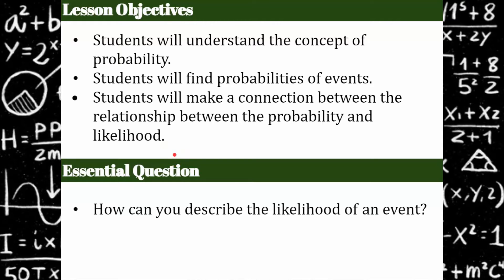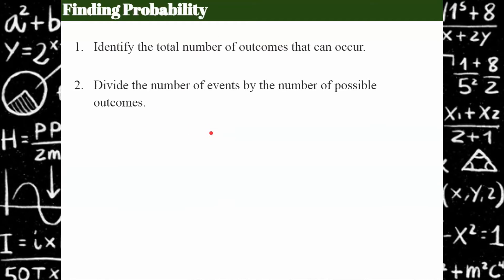I want that in the back of your mind because that's our end goal. We're going to use that when we're all done and we understand probability. So let's talk about finding probability now. There are two things we need to do: identify the total number of outcomes that can occur. The first example is rolling a number cube.